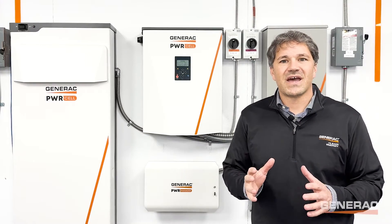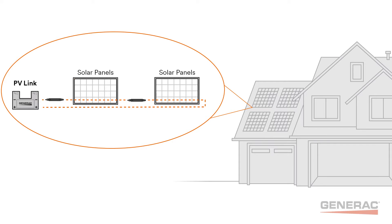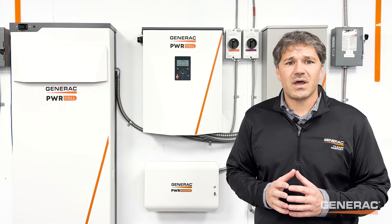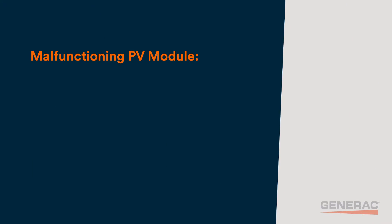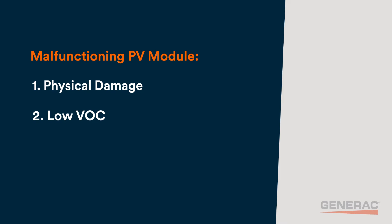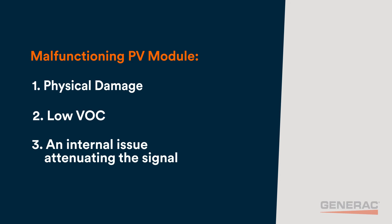The PV link uses a high frequency signal to count and control the SNAP-RS. If the signal cannot pass through the substring due to a malfunctioning PV module, the PV link will not make power and will display low sun. There are three reasons why the signal may not pass through a malfunctioning PV module: number one, physical damage; number two, low VOC; number three, an internal issue attenuating the signal.